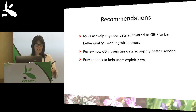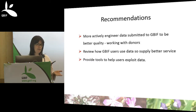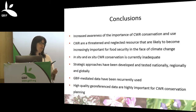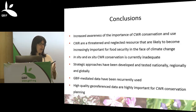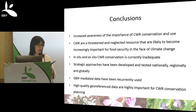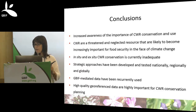In conclusion, there is increased awareness of the importance of crop wild relative conservation and use. They are threatened and neglected but are likely to become very important for food security in the face of climate change. In situ and ex situ conservation of these species is currently inadequate, but strategic approaches have been developed and tested at national, regional, and global levels. GBIF-mediated data is a valuable source in these approaches, but high-quality georeferenced data is essential to efficiently conserve and plan for these resources.